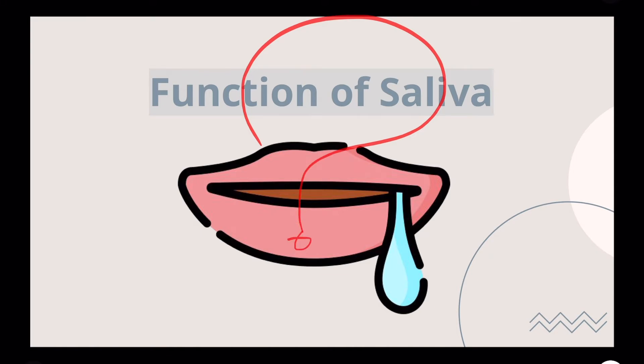What is the function of saliva? Saliva is very important for immunity — it produces IgA, peroxidase, and lysozymes, which are antibacterial. For digestion, it produces amylase. For lubrication, it enhances oral hygiene. If there is poor lubrication or dry mouth, it will lead to poor oral hygiene.